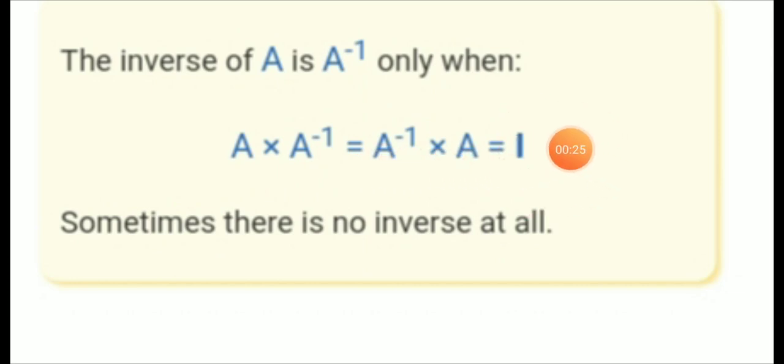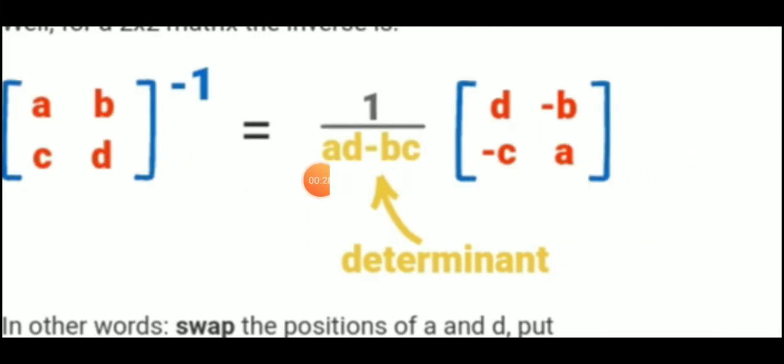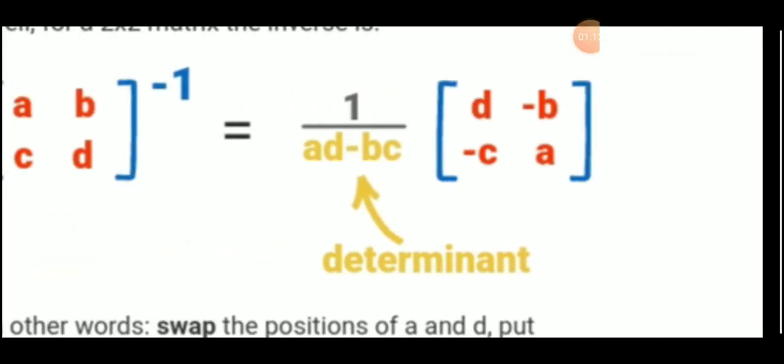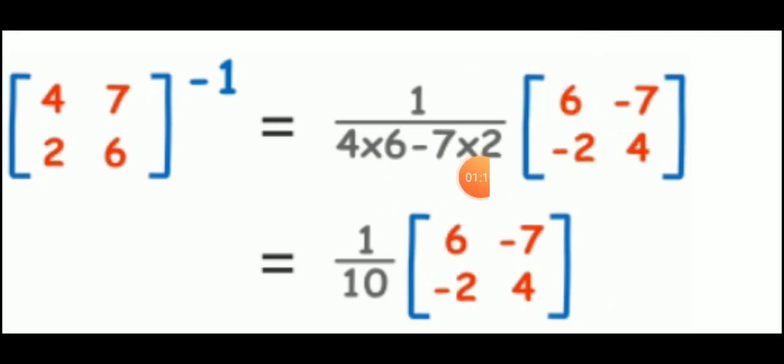Whenever you're finding the inverse of a 2 by 2 matrix, there is a simple formula. Remember: 1 over (ad minus bc), where you take the principal diagonal product minus the reverse diagonal product. Then interchange the principal diagonal elements and change the sign of the reverse diagonal elements to get d, -b, -c, a. This formula is very important to remember.